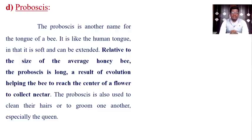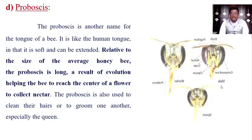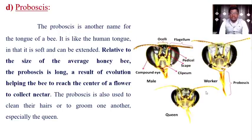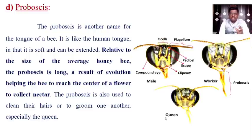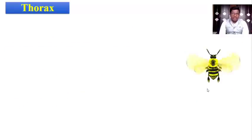The proboscis is also used to clean their ears or to groom one another, especially the queens, as social behavior around the queen is significant. Looking at the differentiation between the length of the proboscis across castes: it is longest in the worker bees compared to the male and queens. The drone has a very short proboscis compared to the queen. The queen has a moderate length proboscis.